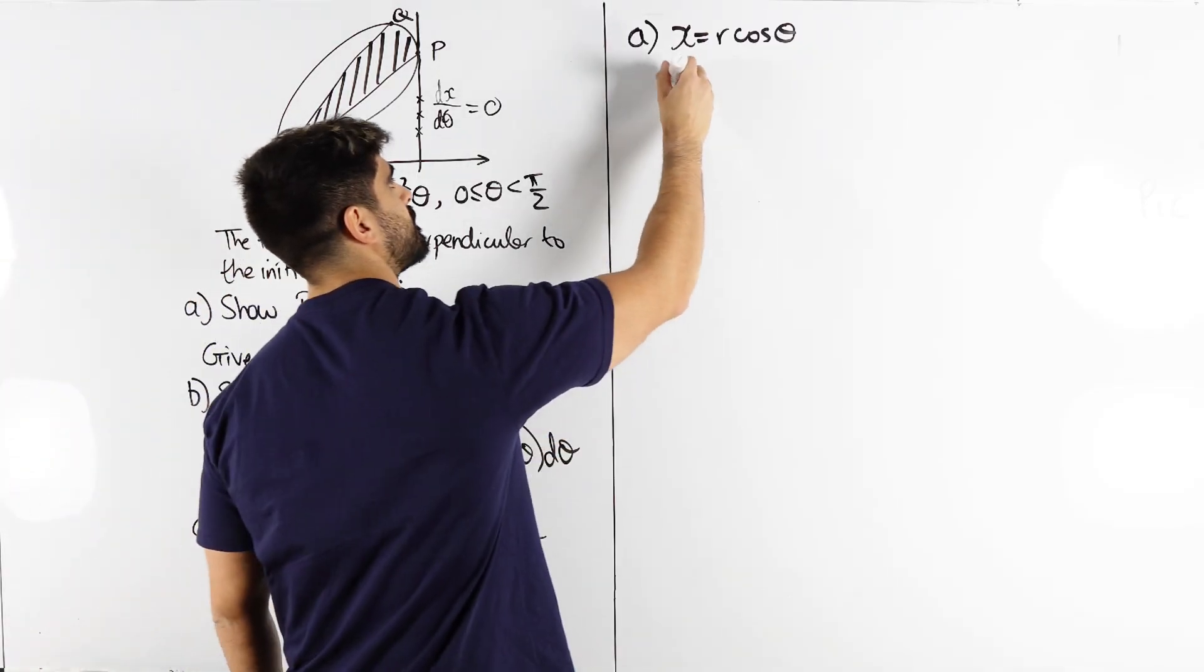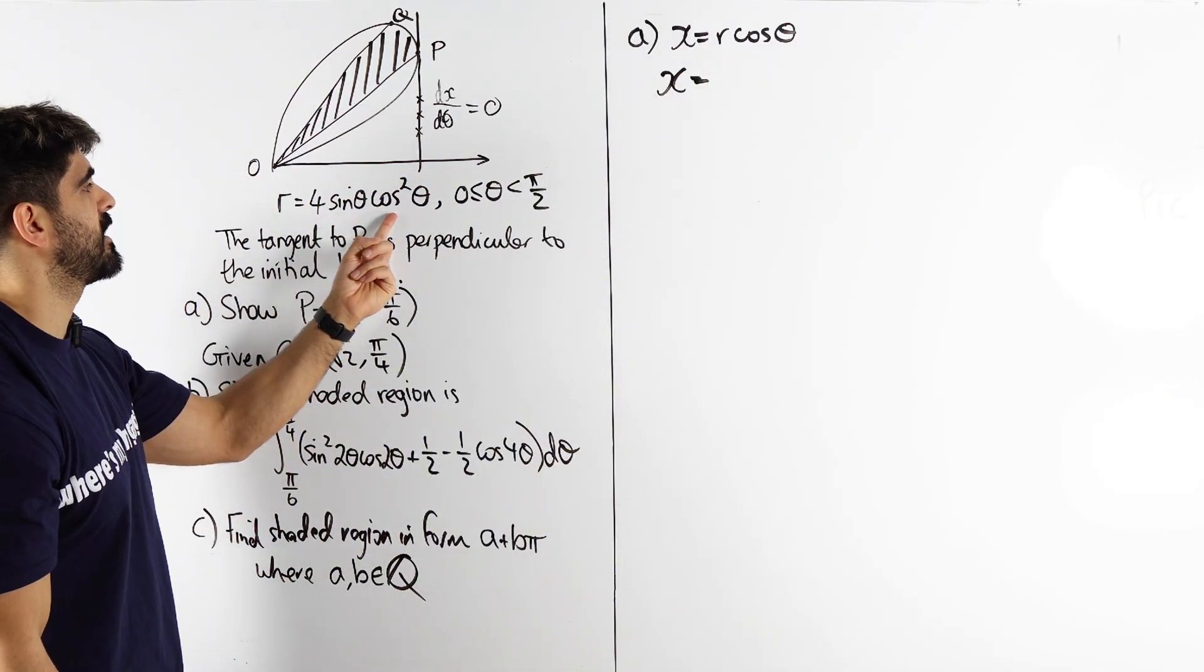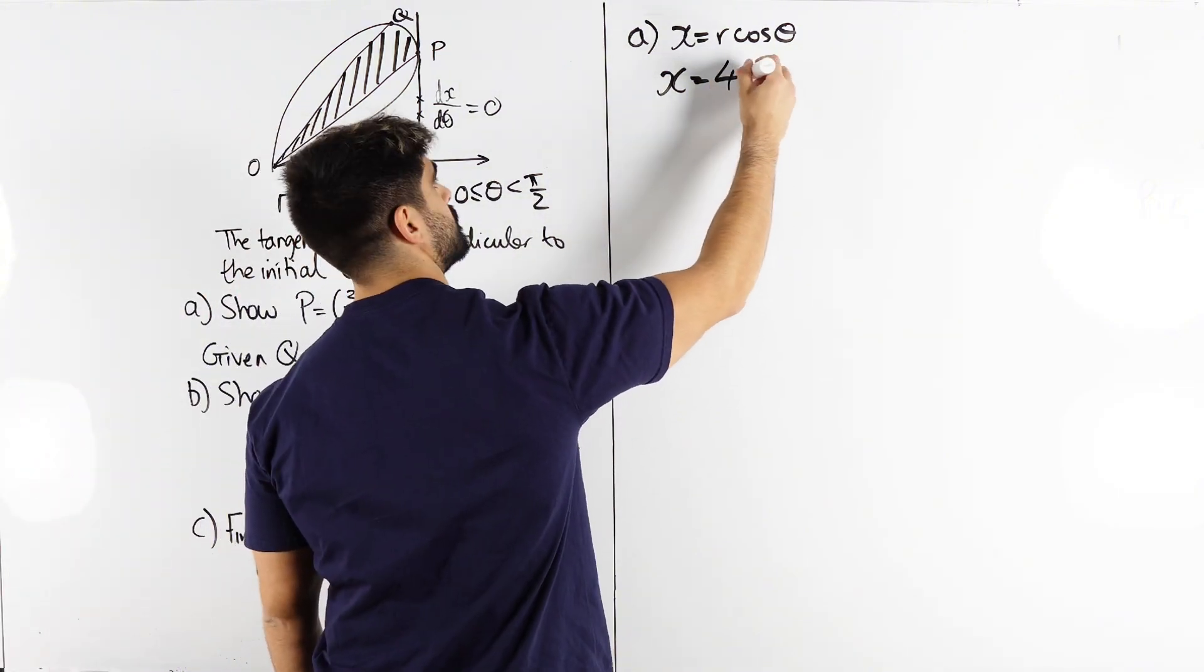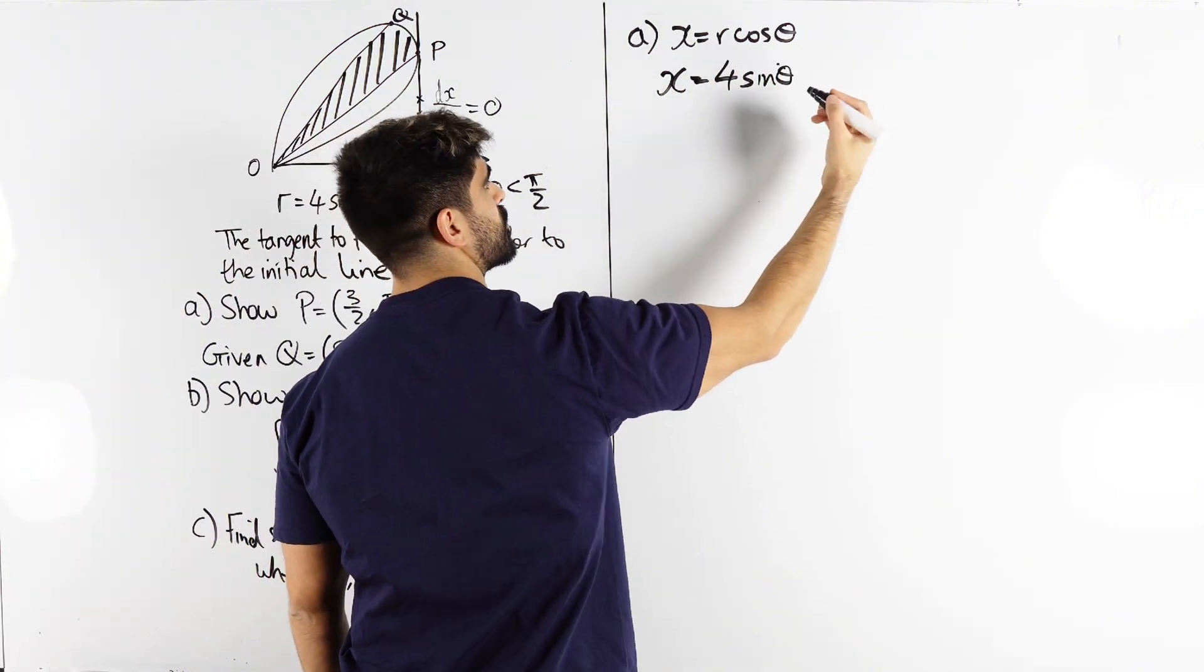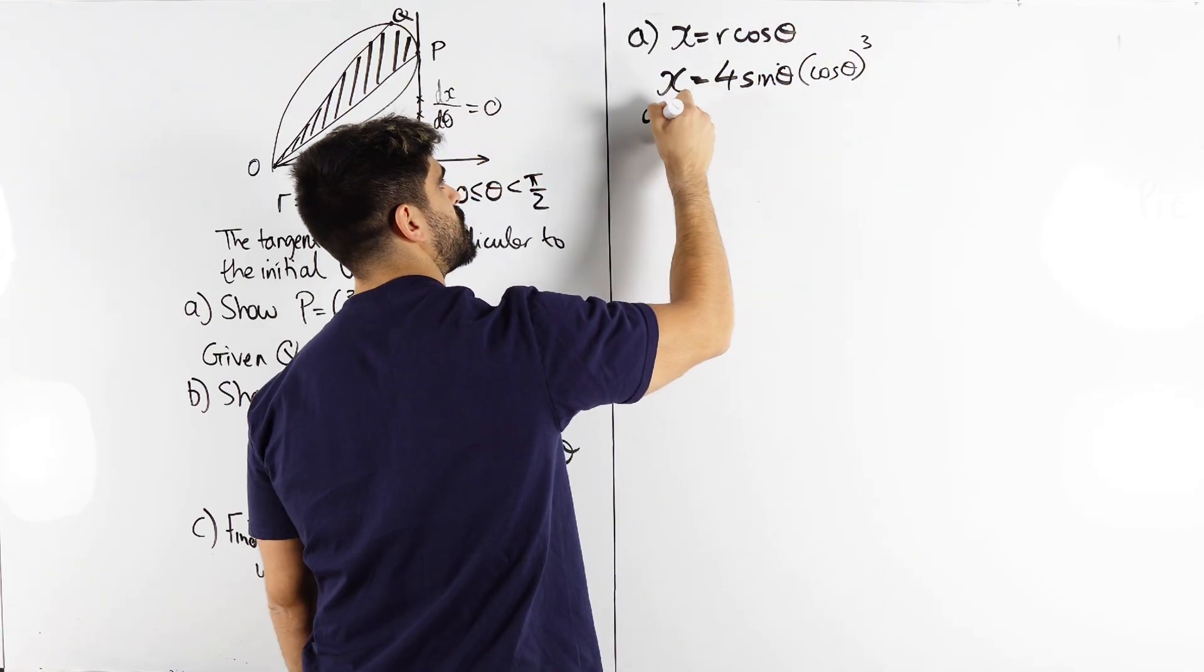So x equals r which is this times cos theta which will make that cos cubed. So we'll get four sine cos cubed. Now because we have to differentiate I'm going to write as cos theta all cubed. Now let's differentiate.